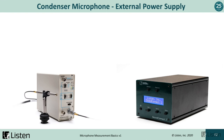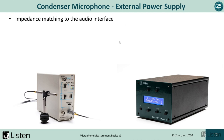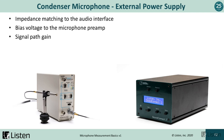Condenser microphones require some sort of external power supply. On this slide we're showing a couple of Listen products: on the left is the Listen Sound Connect, a single-channel microphone power supply, and on the right is the Sound Connect 2, a dual-channel power supply, which we'll use in today's demonstration. The reasons we need a power supply are: impedance matching to the audio interface, providing bias voltage to the microphone preamp, signal path gain, and frequency filtering — either a high-pass or a low-pass filter.